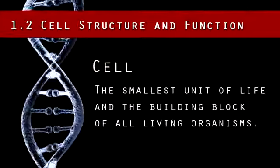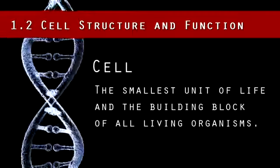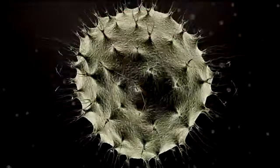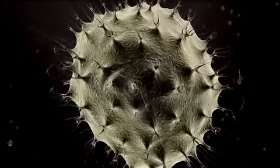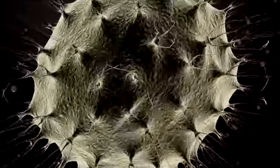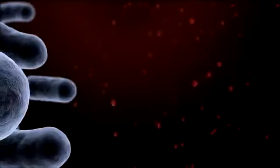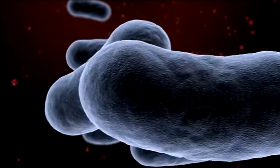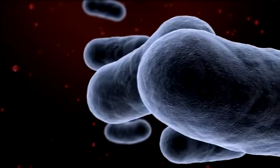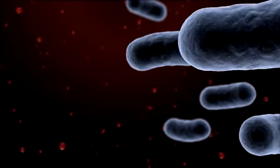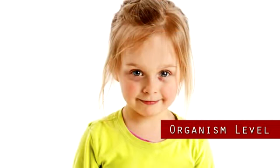A cell is the smallest unit of life and the building block of all living organisms. Appreciating the similarities and differences between cell types within and among organisms is particularly important to the fields of cell biology and molecular biology. Molecular biology can be confusing because it focuses on things so small you cannot even see them. So let's begin with big organisms and work down to the molecular level.